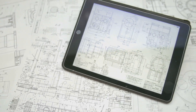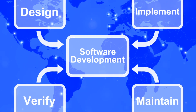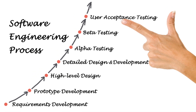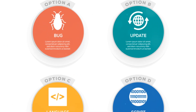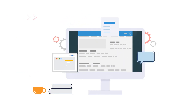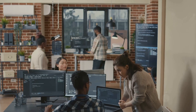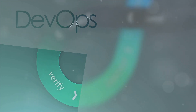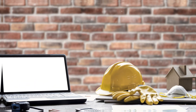Creating software is like building a house — you don't just start laying bricks without a plan. That's where the Software Development Life Cycle, or SDLC, comes in. It's a roadmap outlining the different stages involved in building software from the initial idea to the final product. Just like a recipe guides you through baking a cake, the SDLC provides a structured approach to building software, ensuring each step is carefully considered and executed, helping manage complexity by breaking the process into smaller, more manageable stages.